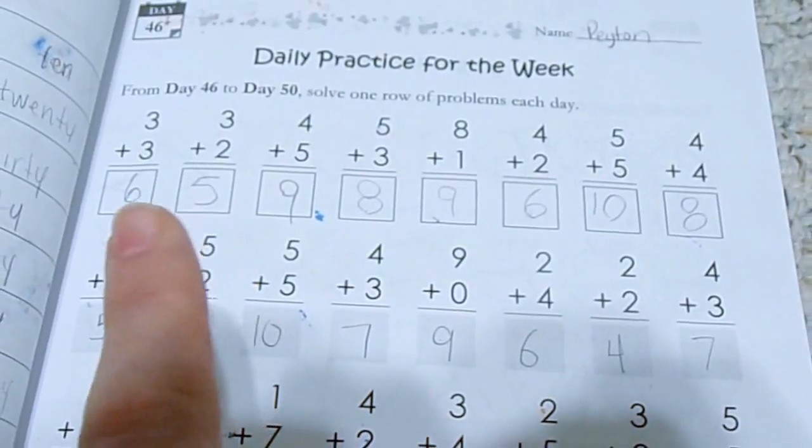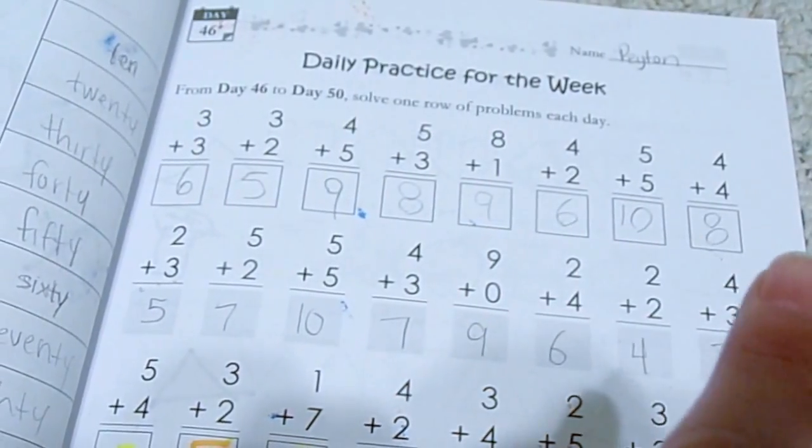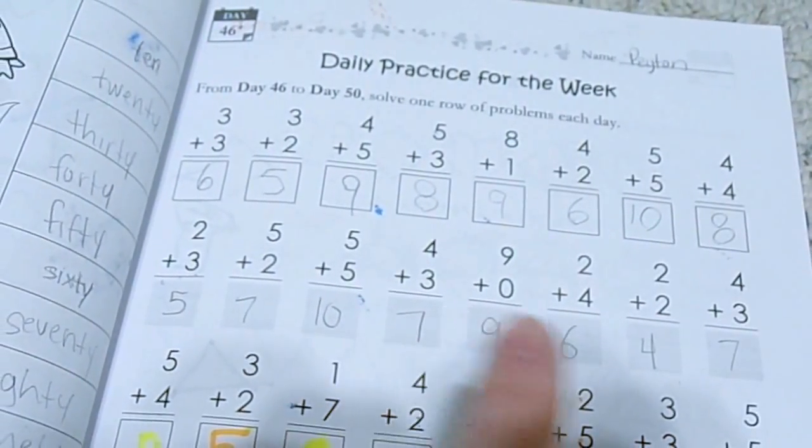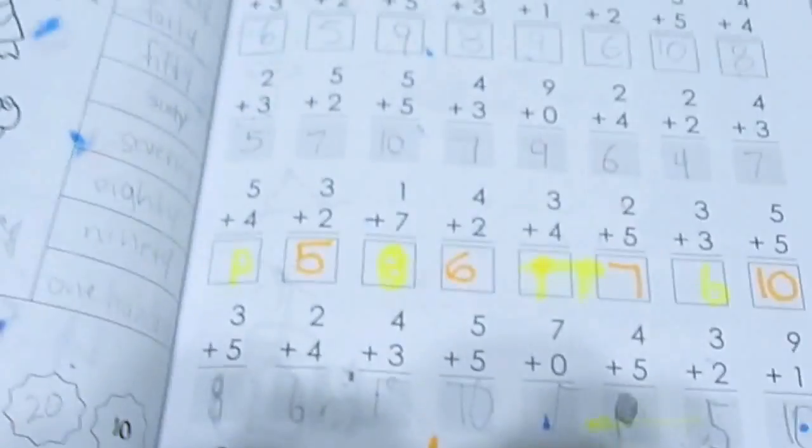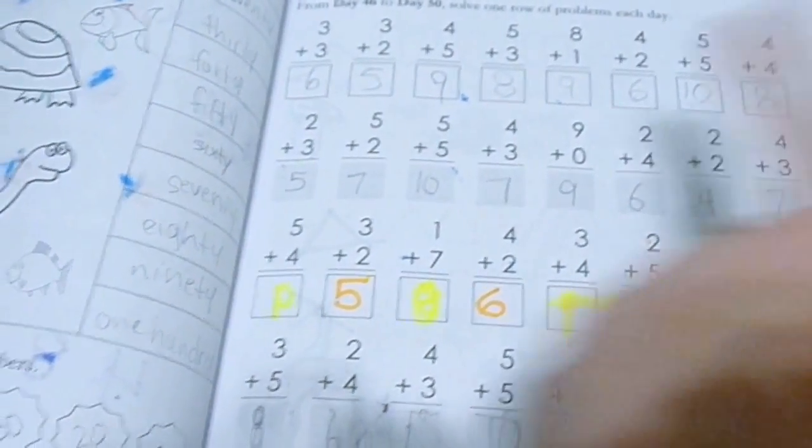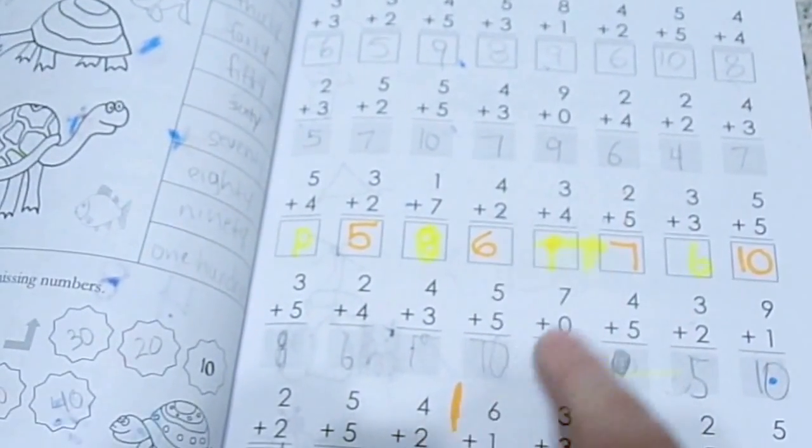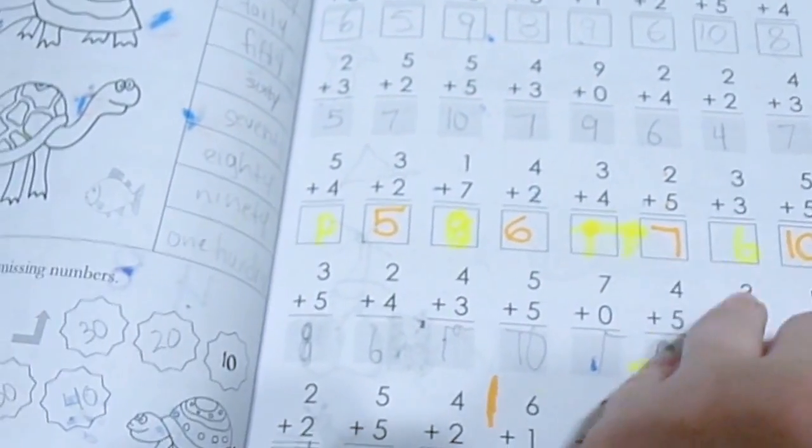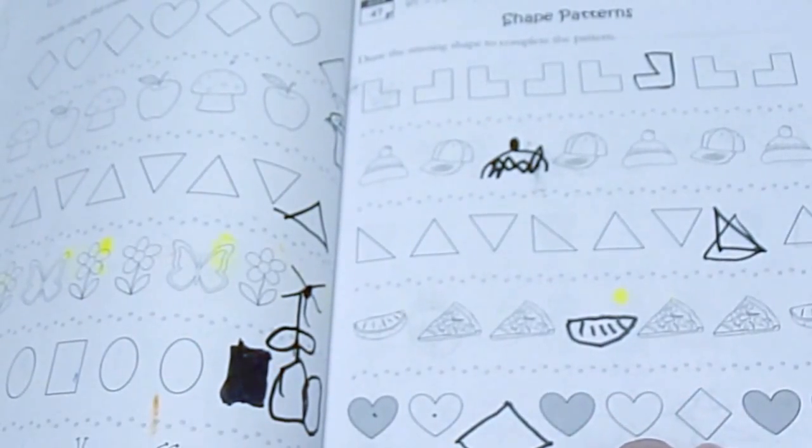This was what I was talking about with the daily practice with the addition. You would do day 46, day 47, day 48, day 49, and day 50. You would do a line and then you would do your worksheet throughout the week. I liked that they had this. It was kind of like a little drill before he did his worksheet, and so he was able to really master his addition facts this year from all the practice that he got.